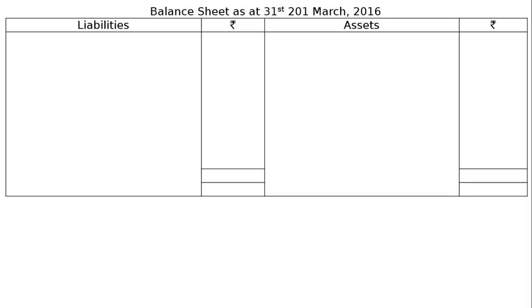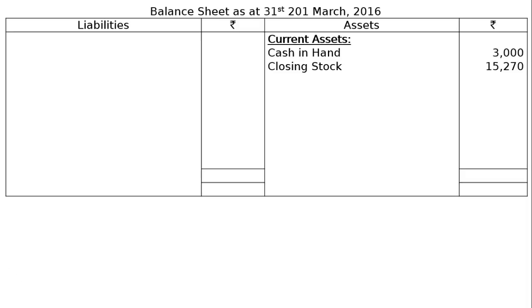Now for the balance sheet as at 31st March 2016. We start from the asset side after drawing the format. Under current assets: cash in hand rupees 3,000; closing stock rupees 15,270; sundry debtors rupees 80,000 — no provision for bad debt is mentioned.